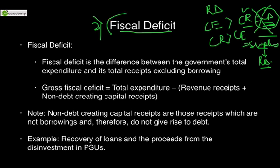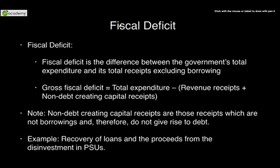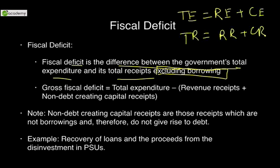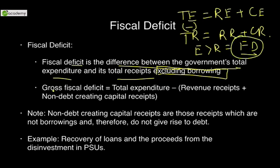Coming to the second deficit — fiscal deficit, a very popular measure you may have heard in the news hundreds of times. Fiscal deficit is the difference between the government's total expenditure and its total receipts, excluding borrowings. Total expenditure includes revenue expenditure plus capital expenditure; total receipts include revenue receipts plus capital receipts. The definition of gross fiscal deficit is: total expenditure (revenue expenditure plus capital expenditure) minus revenue receipts plus non-debt creating capital receipts. Very important — non-debt creating capital receipts: those receipts that do not create a debt.